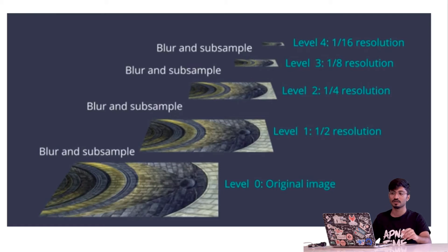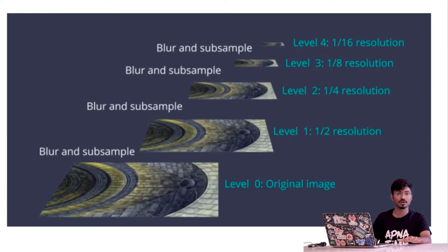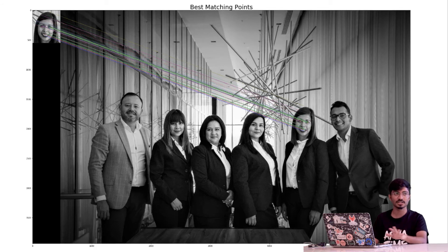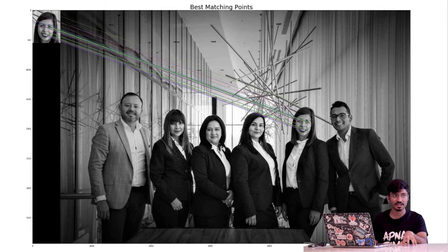For each level of the image pyramid, a key point is detected and stored. For rotational invariance, we use a famous centroid algorithm — a mathematical algorithm for keeping an image rotationally invariant. For example, given a training image and a query image, we detect key points using ORB, then use a key point matching algorithm. The best matching points are detected, and those best matching points identify the object to be detected.